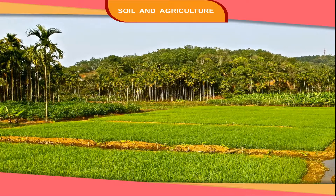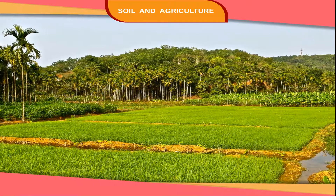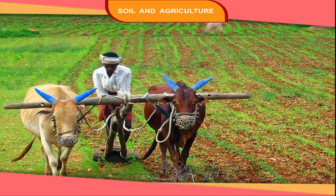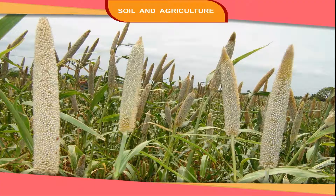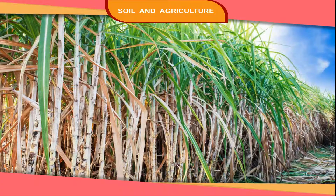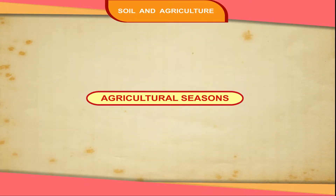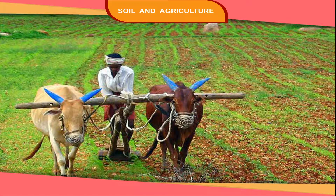Agriculture is the main source of livelihood of the people of India. Our farmers grow many types of crops, including wheat, paddy, millet, maize, cotton, jute, sugarcane, tea, coffee, spices, etc. Different crops are grown in different seasons.